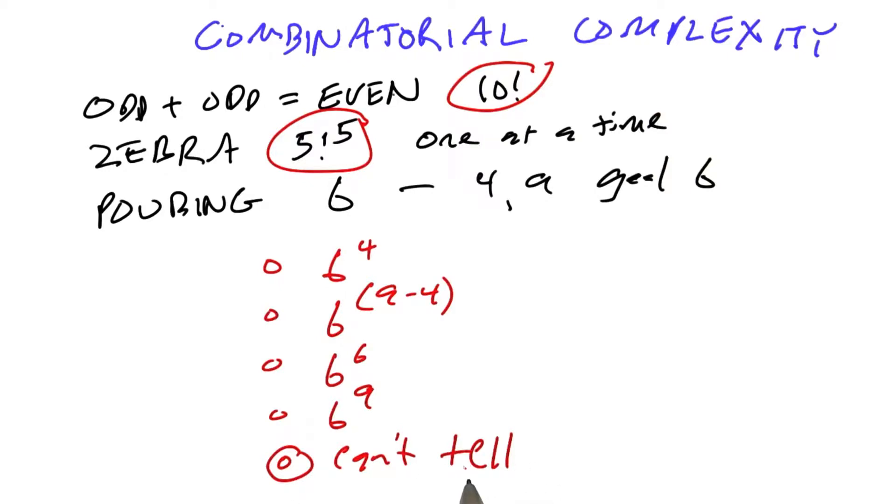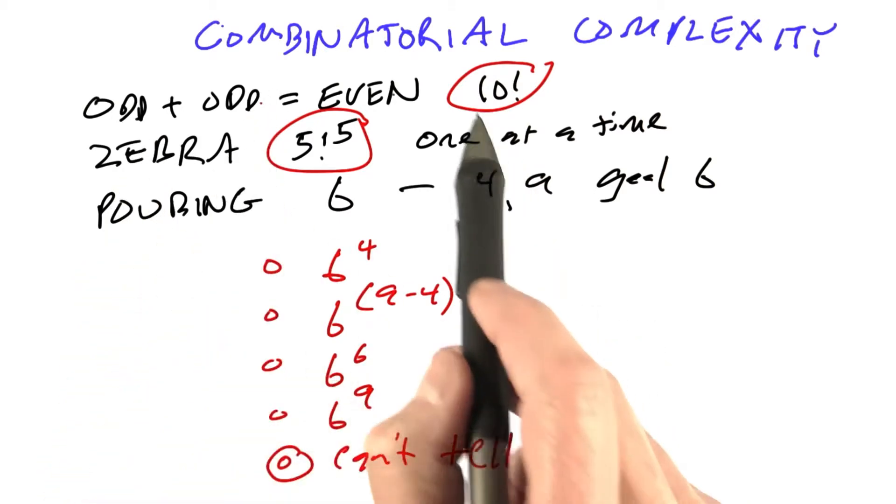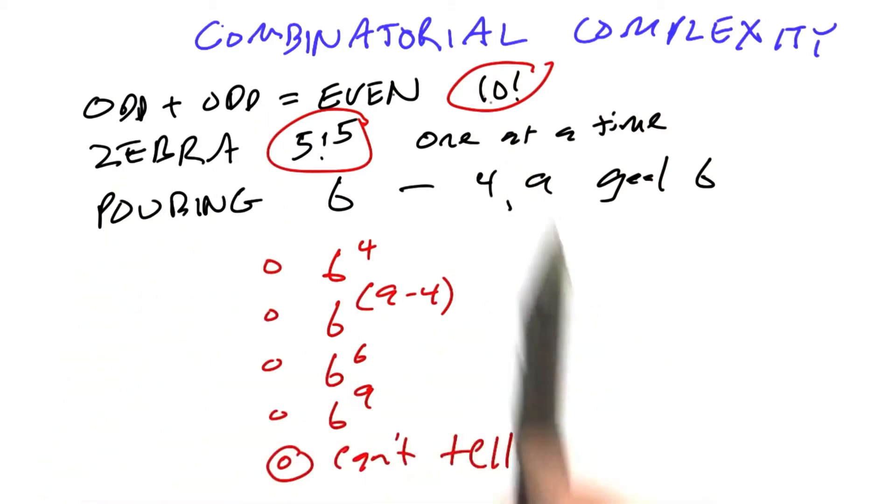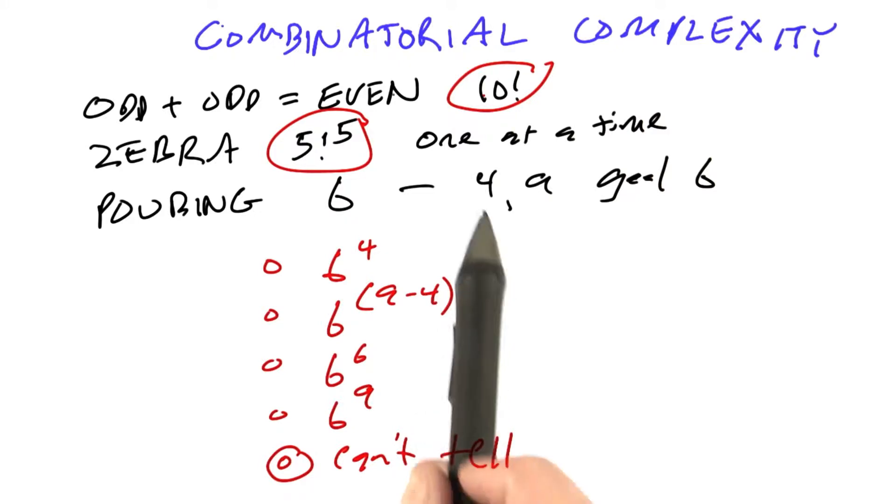The answer is that you can't tell. This is a different type of combinatorial problem than the previous ones. In the previous ones, we had a fixed number of variables, and we knew how many combinations we had for each variable.